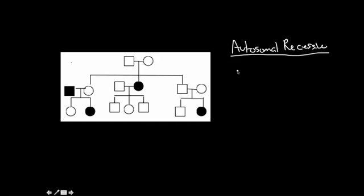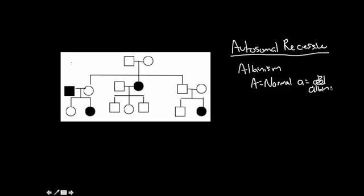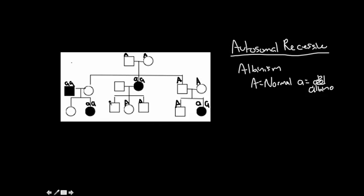In this case we'll use an autosomal recessive disorder called albinism. Big A is normal, and little a is albinism. Everybody shaded in has albinism. Because it's autosomal recessive, we give everybody shaded in little a, little a — that's the only way to have albinism, with two recessive albino alleles. Everybody not shaded in is normal, so we give them one capital A. Never both dominant alleles to start — give one dominant allele and that's it. Then we figure out the rest after filling everyone in.